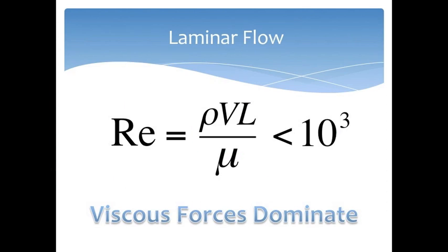When Reynolds number is less than an order of magnitude of ten to the third, fluid flow is characterized as being laminar. In this type of fluid flow, viscous forces dominate inertial forces.